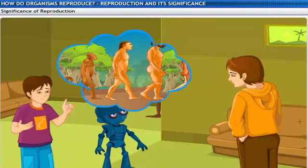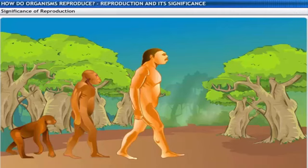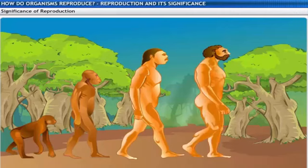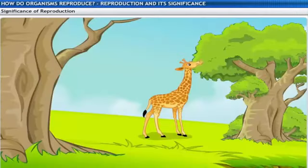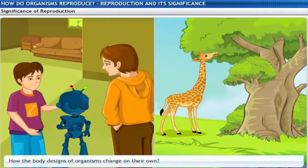The documentary also showed how human beings evolved from apes. But you said reproduction produces organisms of similar type. So, how do features of organisms change through evolution? You have to understand that evolution is a long drawn out process that takes place over millions of years. Organisms live together in a well-defined environment. During reproduction, these organisms produce body design features suitable for that environment. For example, over generations, giraffes developed long necks to eat the leaves growing high up on trees.